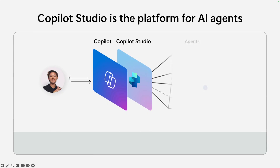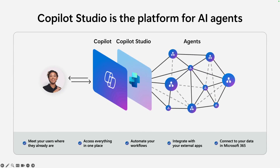But where do we build and manage these agents? That's where Copilot Studio comes in. It's a platform for creating, deploying, and managing agents. Copilot Studio gives you one place to do it all — you can automate your workflows, integrate with external applications, and connect to your Microsoft 365 data. A key benefit of Copilot Studio is the orchestration layer it provides. Think of this orchestration layer like a symphony: the conductor doesn't play every instrument, but decides when the violins come in, when the drums should hit, and how it all fits together. In the same way, the orchestration layer coordinates your agent's knowledge, tools, and instructions to deliver the right outcome.